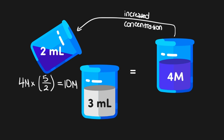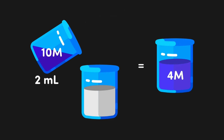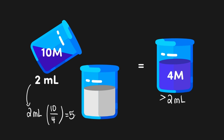We can use this same technique when calculating starting and ending volumes of a dilution. In this instance, we've been given the starting and ending concentrations as well as the initial volume of 2 mL. Since we'll be solving for the final volume, we set the 2 mL aside, then consider whether that volume would go up or down when we dilute the sample. Since we're adding additional volume, the final volume must be greater than 2 mL. We arrange the concentration fraction to get the larger value — 10 over 4 — and multiply: 2 times 10-fourths gives us 5 mL as the ending volume.